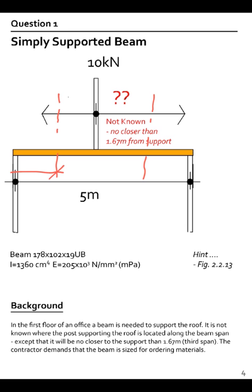Question one: simply supported beam. This is where we have a beam where we don't know where the load is going to be. It is at the third span position anywhere within the beam. The beam is 178 universal beam which is a British section. The I value and the modulus E is given for steel.